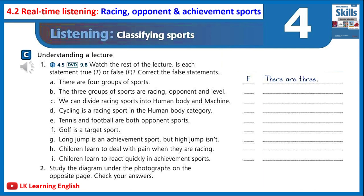Finally, let's turn to achievement sports. In achievement sports there are also two subcategories. Sometimes we try to reach a target — for example, in golf we try to get a white ball into a small hole, so that's a target sport. Sometimes we try to achieve a particular quantity — distance or height. In the long jump we try to jump farther than all the other people; in the high jump, we try to jump higher.